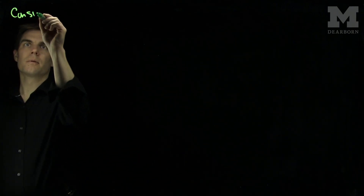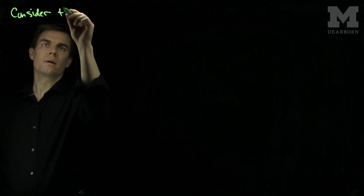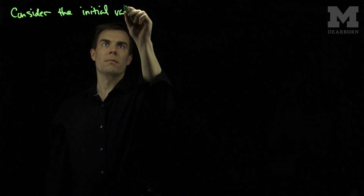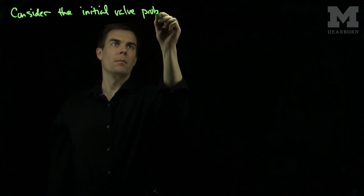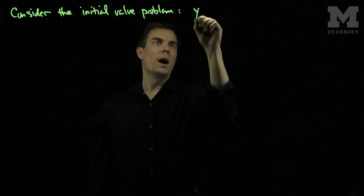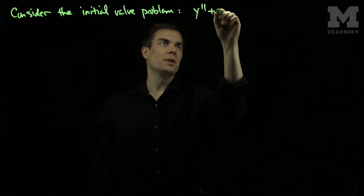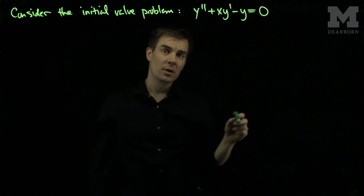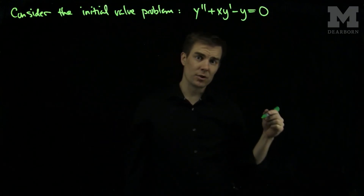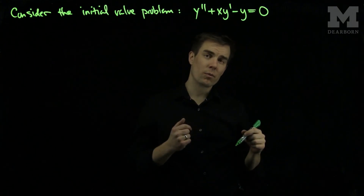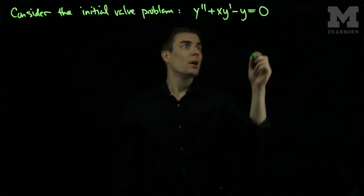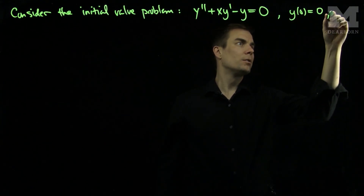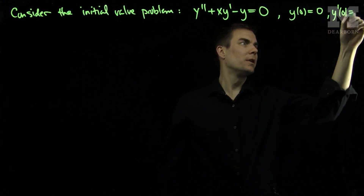Let's consider the initial value problem: y double prime plus x y prime minus y equals zero. So now it's no longer a constant coefficient ODE — it's a variable coefficient ODE. The coefficient of y prime is x, the variable, along with the conditions that y(0) = 0 and y'(0) = 1.